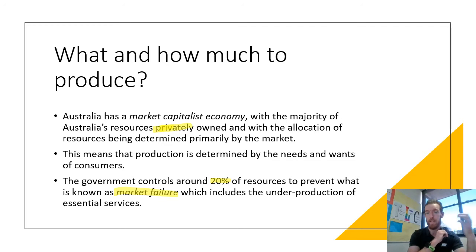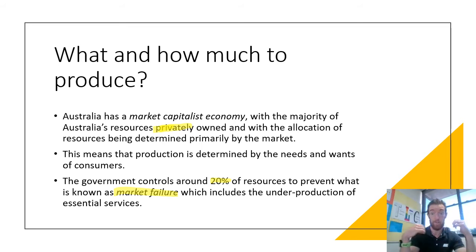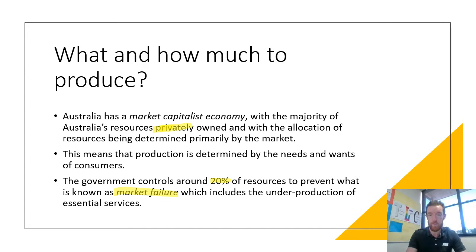The free market does the other 80 percent and will make whatever consumers need and want. What and how much to produce is determined by what consumers are demanding. That doesn't always lead to good things — sometimes things like cigarettes, alcohol, and gambling get produced in large quantities because consumers demand them. But for the most part, businesses make what we need and want, which helps satisfy our living standards.